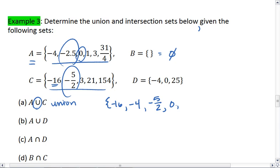We'll take 0, 1. We get 3 in both sets. 31 fourths is close to the value of 8. 21 and 154. So this is the union of A and C.